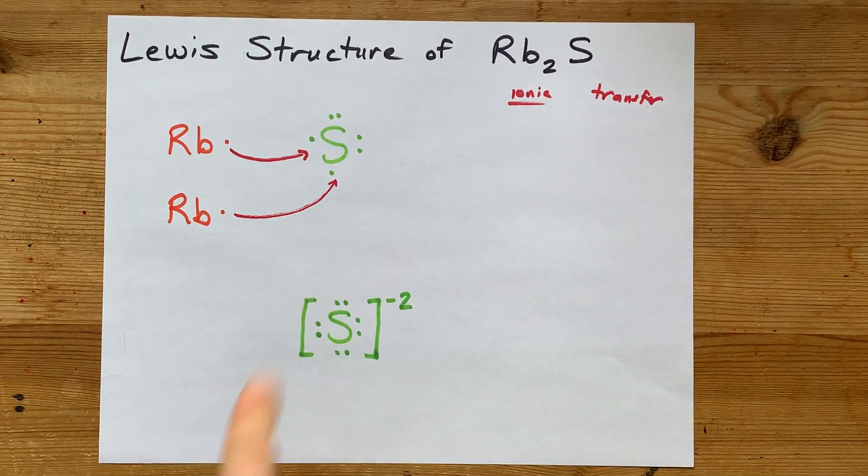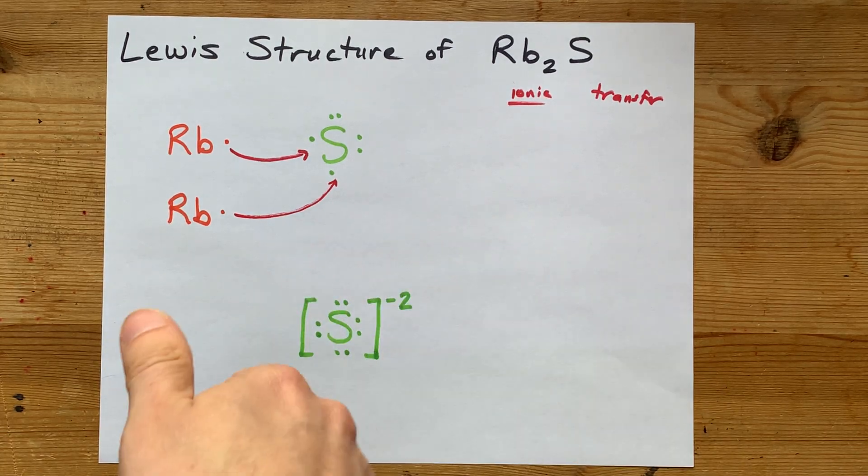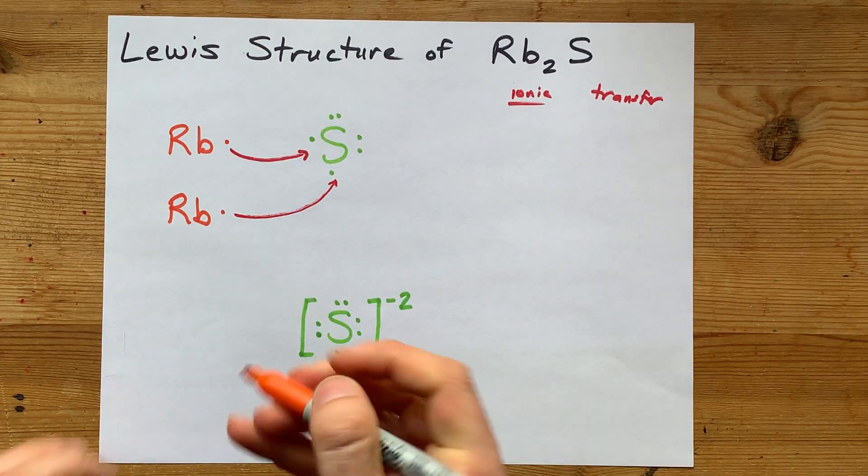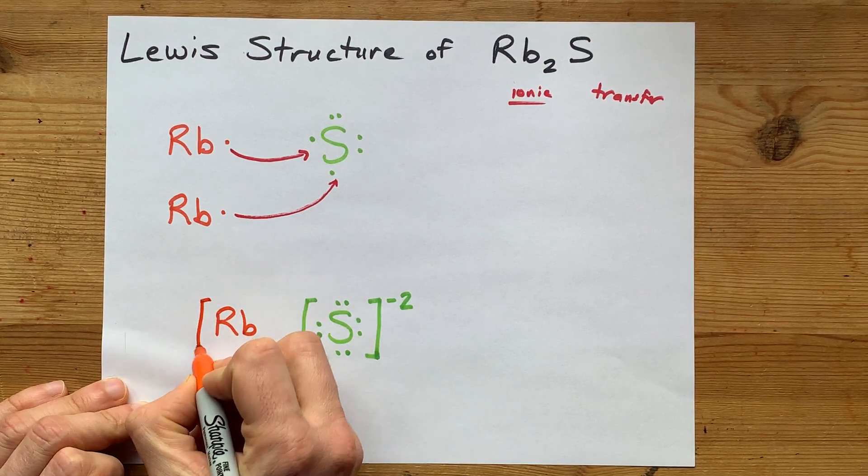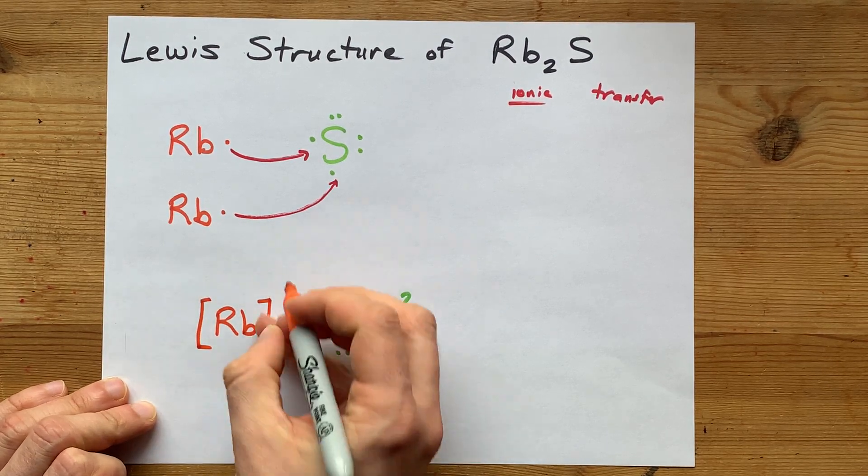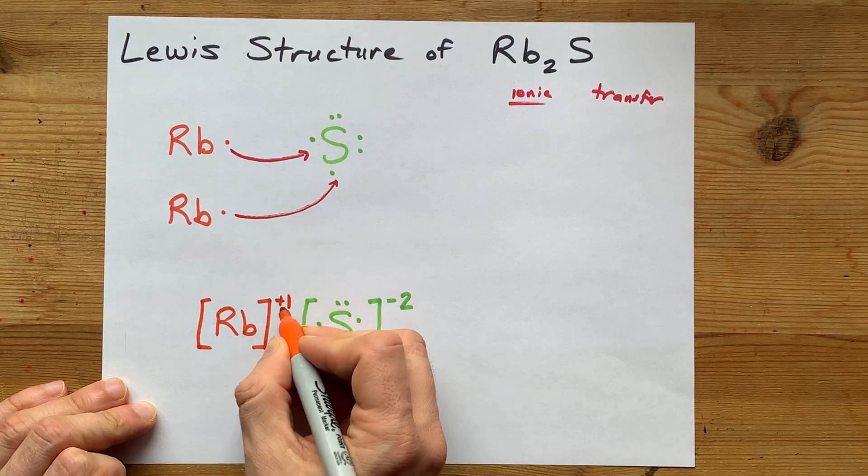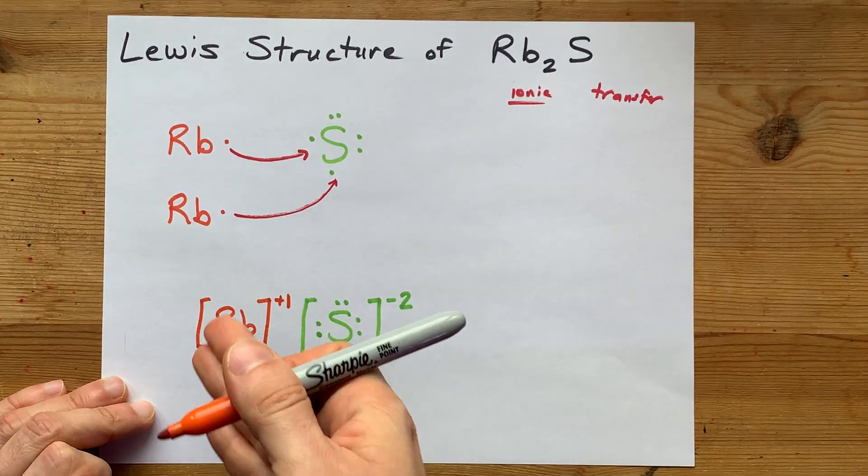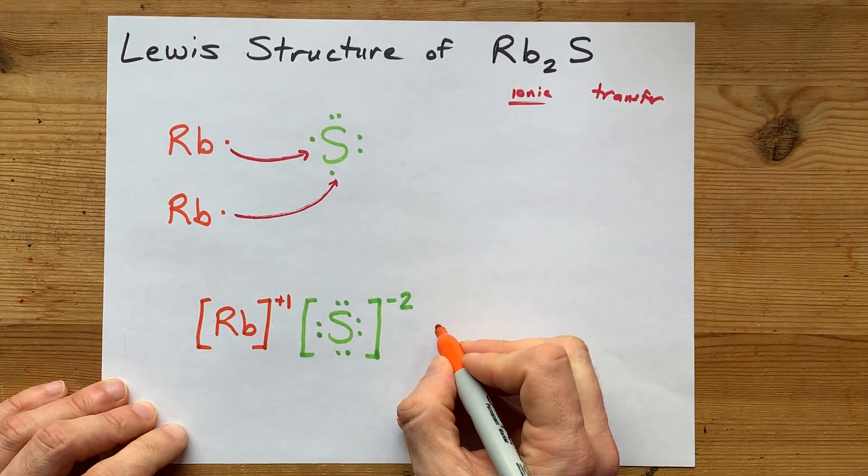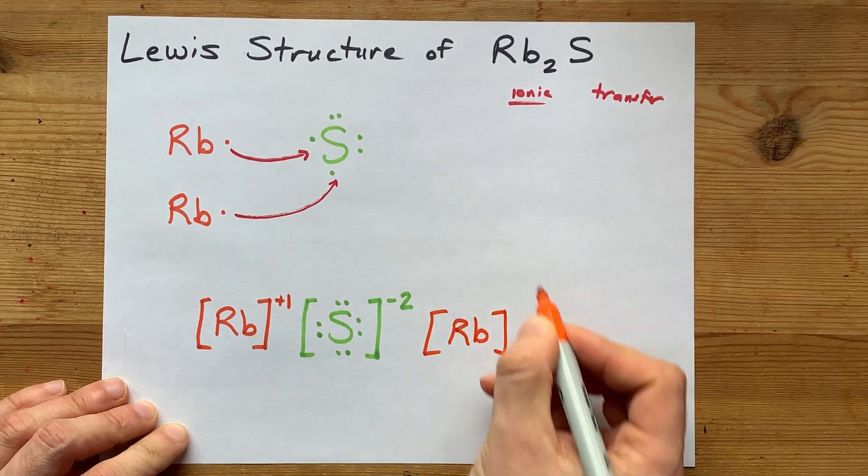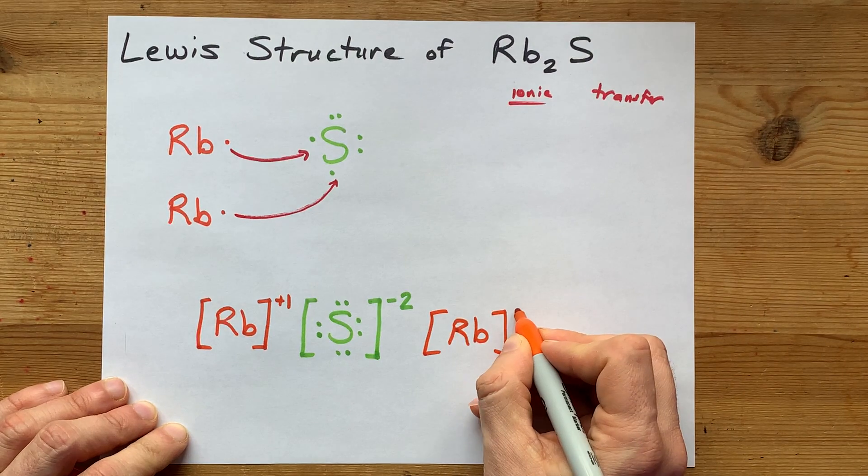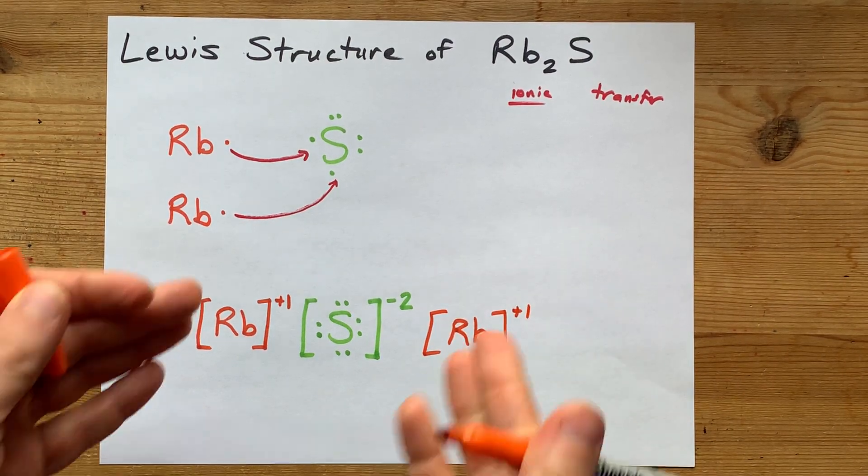The rubidiums, on the other hand, have given away an electron each. I want you to draw them here without dots. Put them in square brackets, and they have a plus 1 charge, because they gave away a negative. Losing a negative makes it positive. And then I want you to do it again on the other side, because there were 2 of them, right? So draw it twice. Don't be lazy. Be a hero.